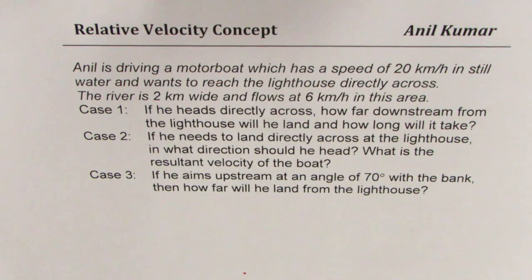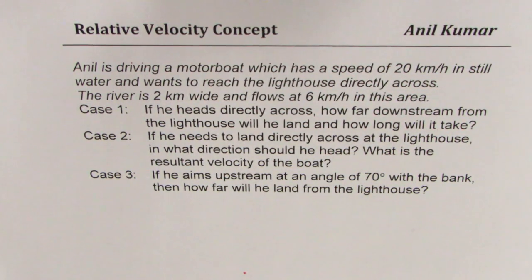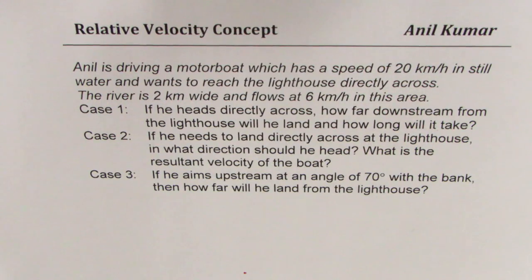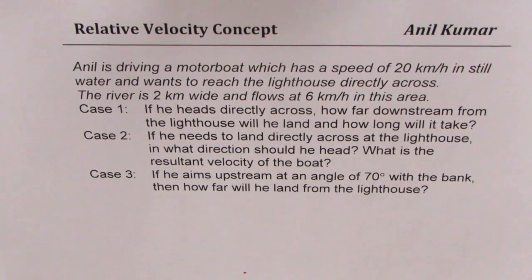Anil is driving a motorboat which has a speed of 20 km/h in still water and wants to reach the lighthouse directly across. The river is 2 km wide and flows at 6 km/h. Case 1: if he heads directly across, how far downstream from the lighthouse will he land and how long will it take? Case 2: if he needs to land directly across at the lighthouse, in what direction should he head and what is the resultant velocity? Case 3: if he aims upstream at an angle of 70 degrees with the bank, how far will he land from the lighthouse?